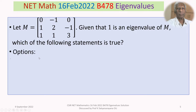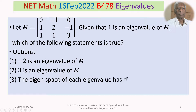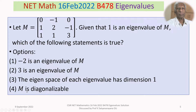We are given four options. Option 1: minus 2 is an eigenvalue of M. Option 2: 3 is an eigenvalue of M. Option 3: the eigenspace of each eigenvalue has dimension 1. Option 4: M is diagonalizable.